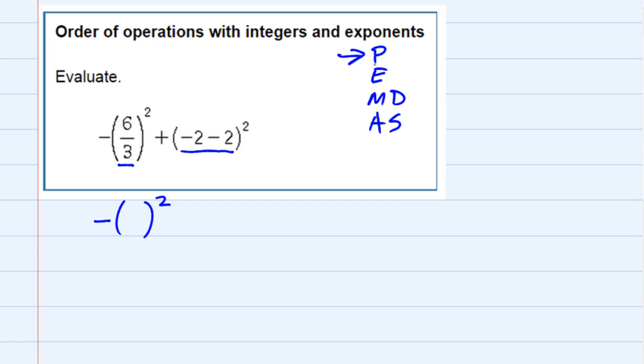6 divided by 3. 6 divided by 3 gives us just 2. And then for the one on the right, again just bringing everything else down, negative 2 minus 2 leaves us at a negative 4. So we have done what is inside the parentheses.